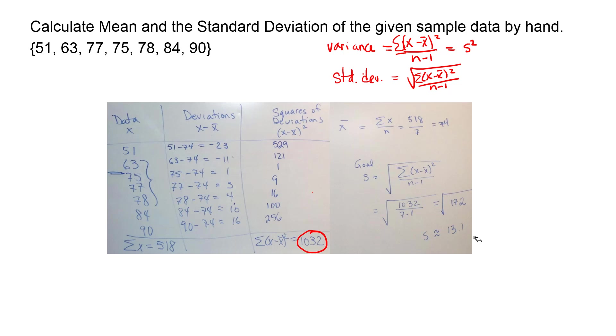Now what is that telling us? That's telling us that most of the data values should be within 13.1 units of the average 74. So 74 minus 13.1 is going to be 60.9 and 74 plus 13.1 is going to be 87.1. So if you look at our data values here most of the data is within that range from 74 which is the average.